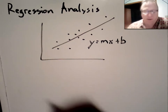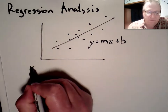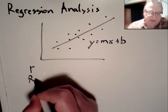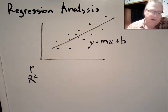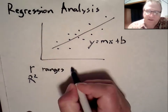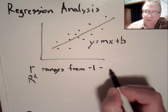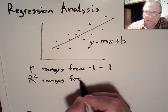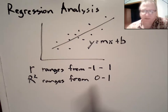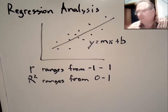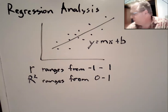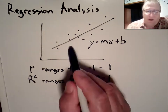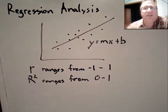Let's talk about the coefficient of correlation, r. If we square it, we have a coefficient of determination called r-squared. r ranges from minus one to one, and r-squared ranges from zero to one — because squaring a negative gives a positive. If r equals minus one or one, we have a perfect relationship where all of our sample data points line up on the regression line.